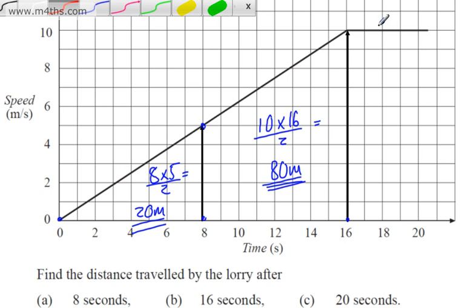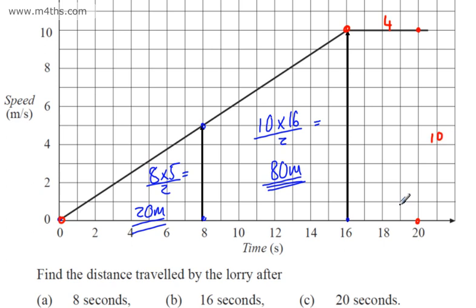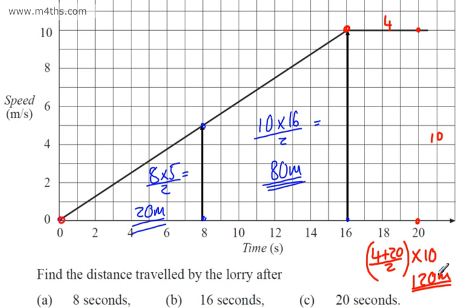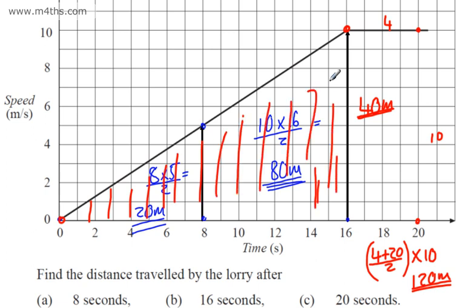For 20 seconds, we can use a trapezium. The bottom is 20, the top (parallel side) is 4, and the perpendicular height is 10. Distance = (4 + 20) ÷ 2 × 10 = 12 × 10 = 120 metres. Alternatively, add the 80 metres already calculated to a rectangle of 4 × 10 = 40 metres: 80 + 40 = 120 metres. Depending on how the question is structured, you might prefer one technique over the other.